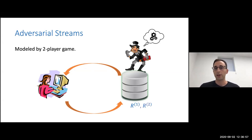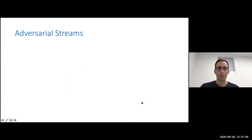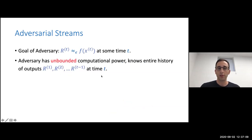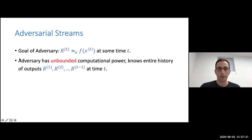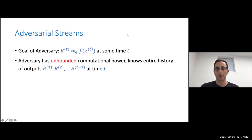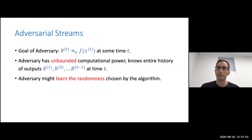Now the adversary has r_1, and can make an adaptive step to choose x_2. Again some processing, we get back r_2. At the next step, the adversary can choose according to r_1 and r_2, and choose x_3, and so on. The goal of the adversary is to make the algorithm mistaken at some timestamp T — to make r_T not epsilon-close to f at that timestamp. The adversary is unbounded and knows the entire history. The main problem is that the adversary might learn some of the randomness used by the streaming algorithm — for example, if the streaming algorithm chooses a pairwise hash, the adversary might learn it and we lose all guarantees.